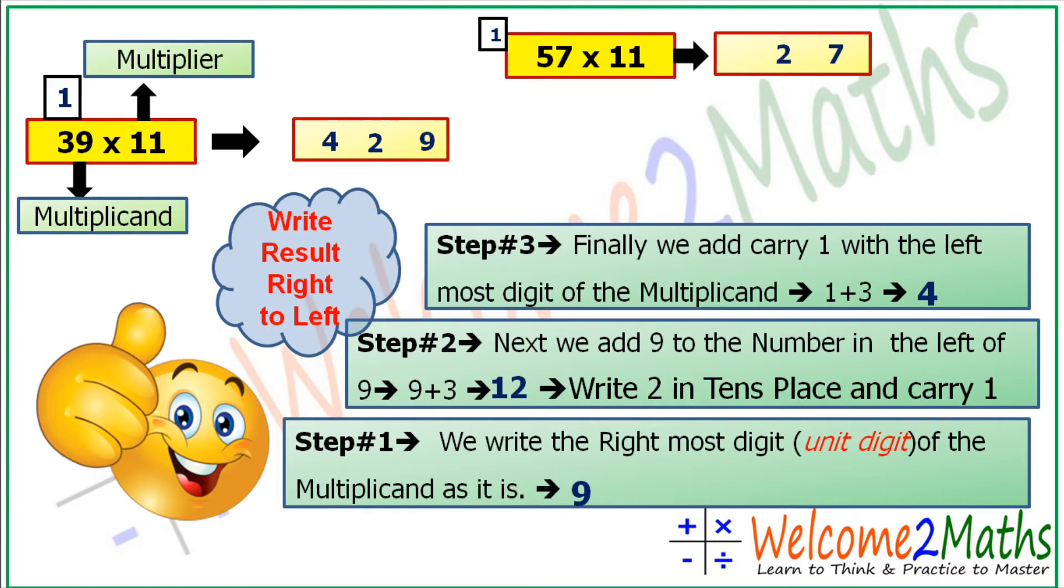Go on to the next example. It's 64 into 11. So at first, the rightmost digit of 64 is 4. Then 6 plus 4 is 10, so let's write 0 here and 1 becomes a carry. So 6 plus 1 is 7. That's our answer.